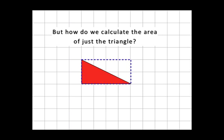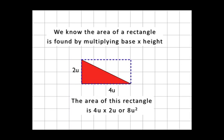But how do we calculate the area of just the red triangle? Well, we start off with the area of the rectangle. We know how to find the area of a rectangle. That's why we've been drawing these blue dotted lines around the red shape. Because we can find the area of this rectangle. In this case, the base is 4 and the height is 2. So its area is 8 units squared.